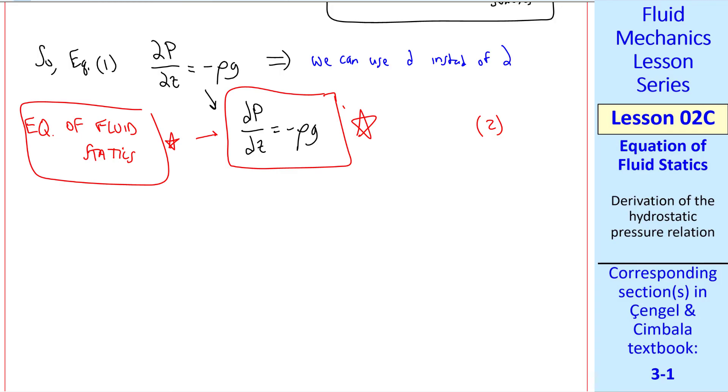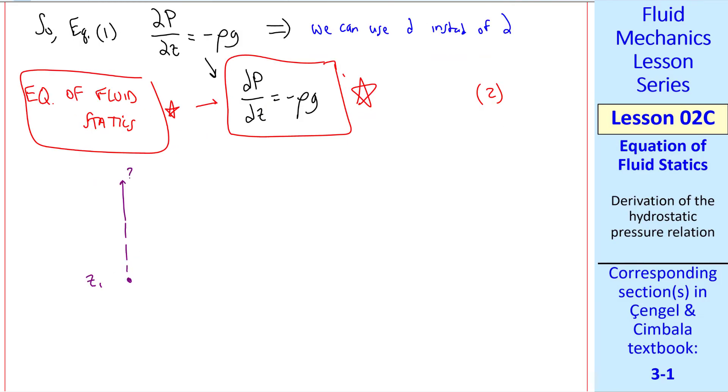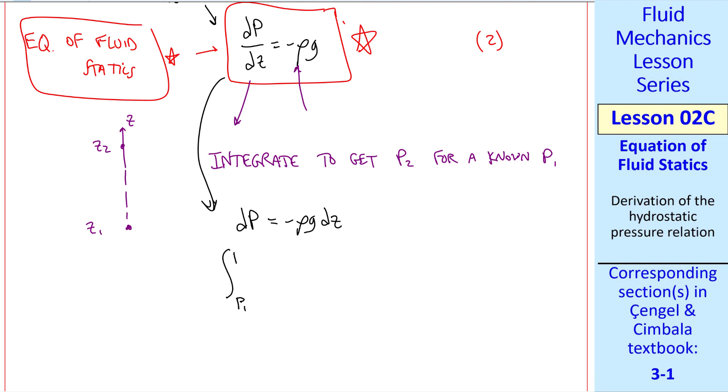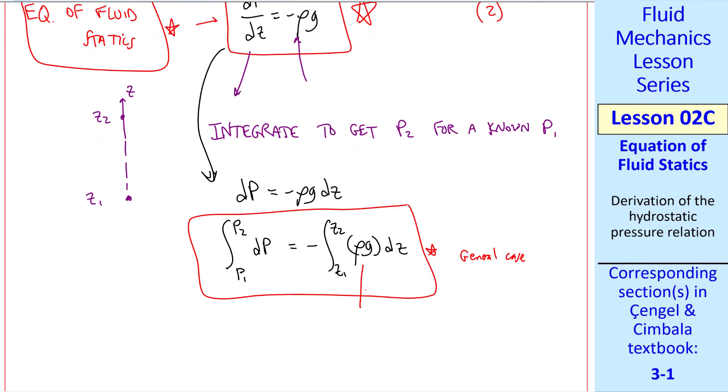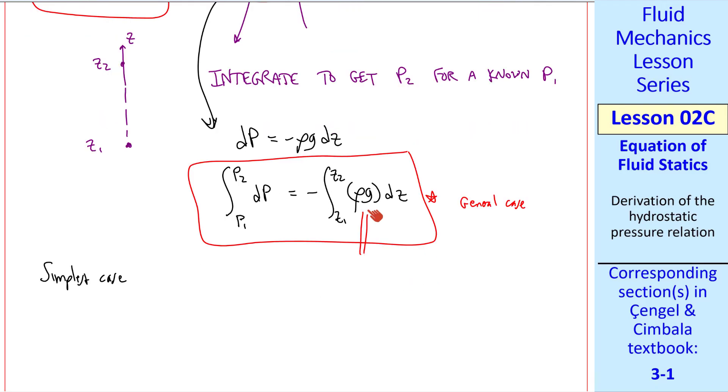dp dz is minus rho g. Suppose we have some location z1, where this is the z direction, and some other height z2. We can find pressure difference by integrating. We integrate to get p2 if we know p1 and we know how rho and g vary with z. We separate the variables and write dp is minus rho g dz, which we can integrate from p1 to p2, and from z1 to z2 on the right. This is the general case. If either of these variables rho or g is not constant, you have to do an integration.